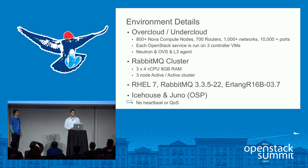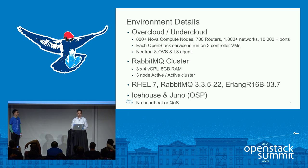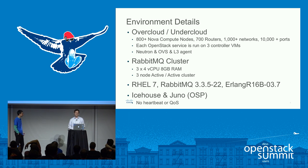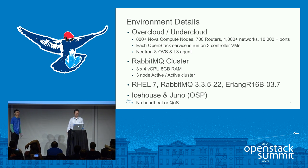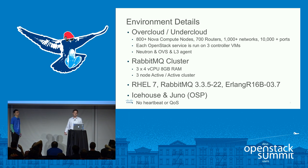To give you a little idea about our environment, we run an over cloud and an under cloud. We are virtualizing the entire control plane for our tenant cloud inside of another OpenStack cloud. Our tenant cloud has over 800 Nova compute nodes, over 700 routers, 1,000 plus networks, and over 10,000 ports.